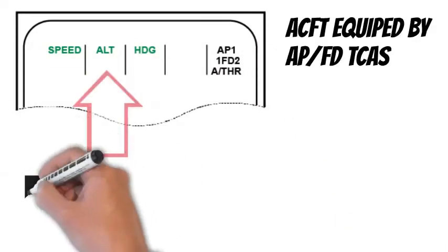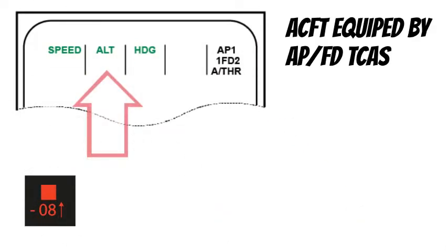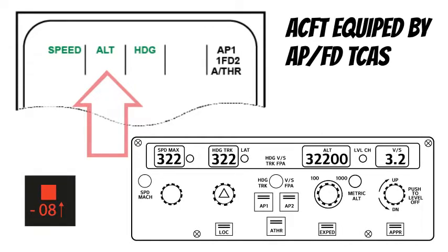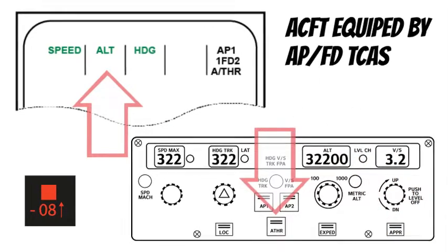When RA is triggered, if the Autopilot is engaged, the PF should keep it on. The Autopilot guides the aircraft following the RA orders.